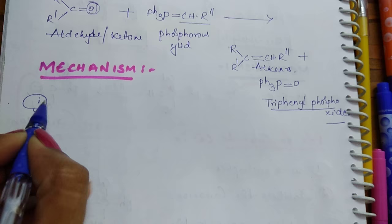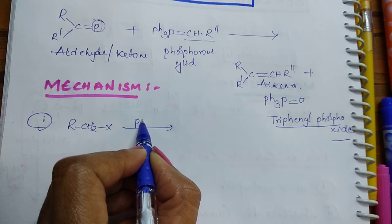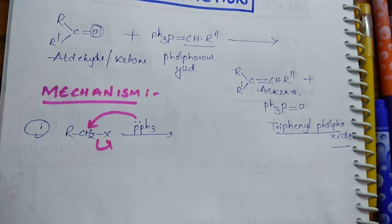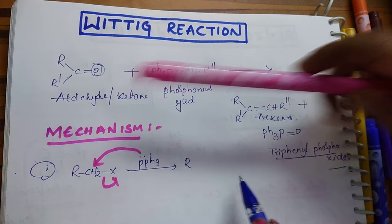Triphenyl phosphine reacts with alkyl halides. See here, phosphorus is having a lone pair which donates to this carbon, then this halogen goes as X minus. We get R-CH2...